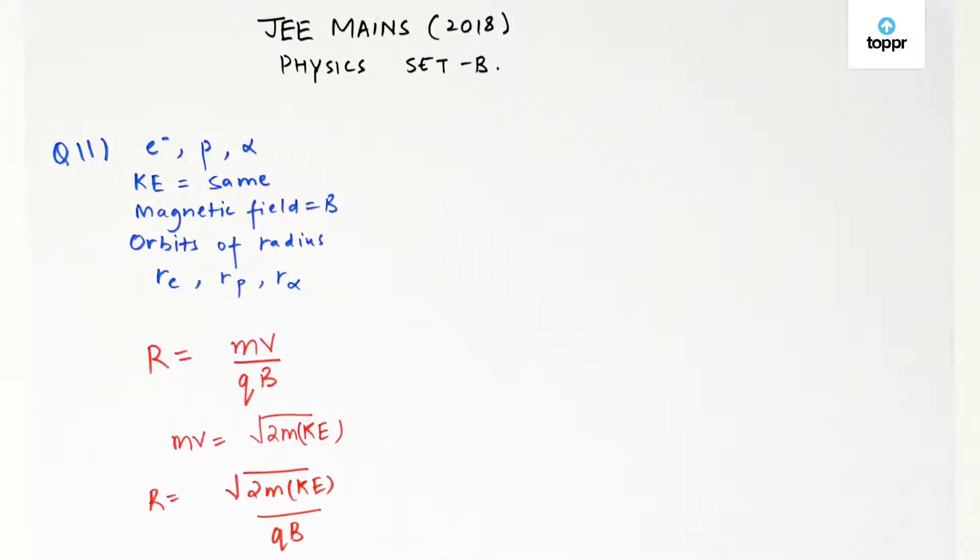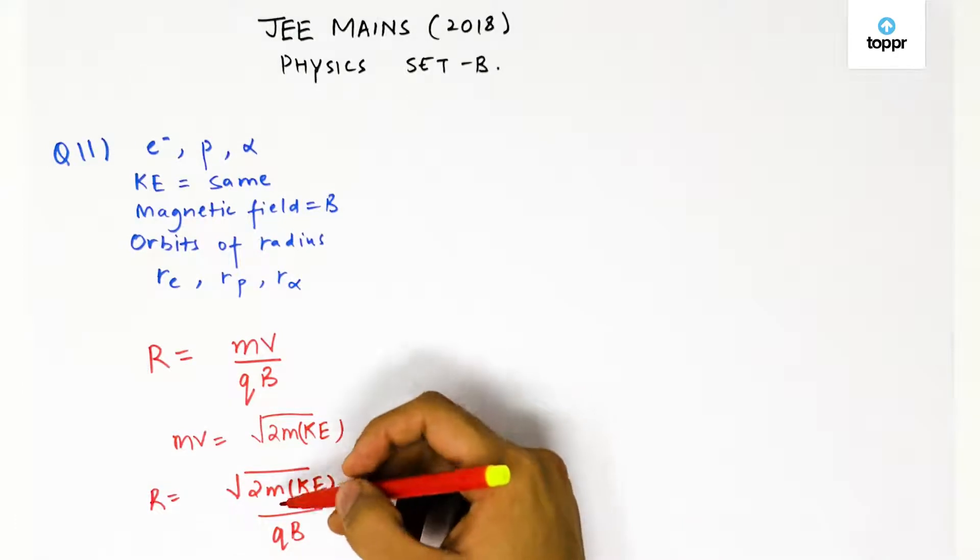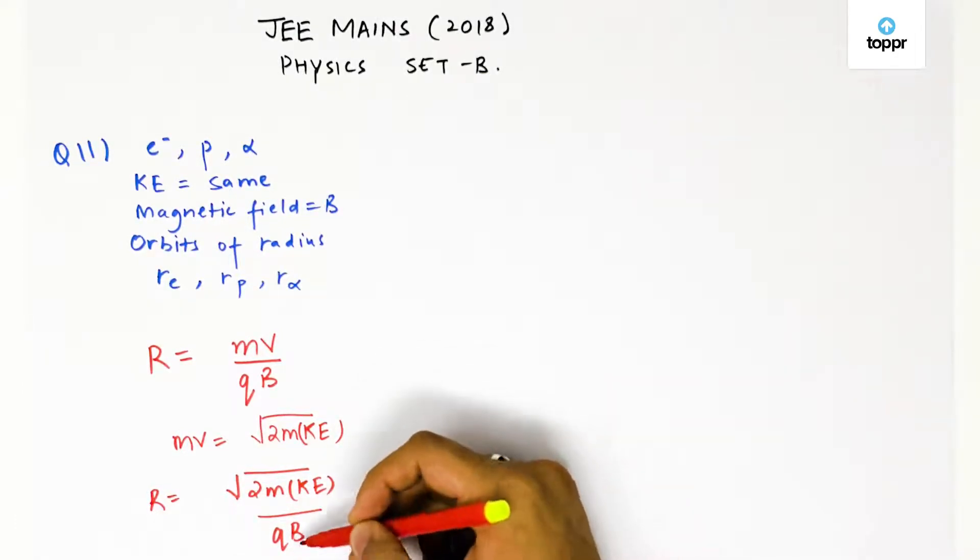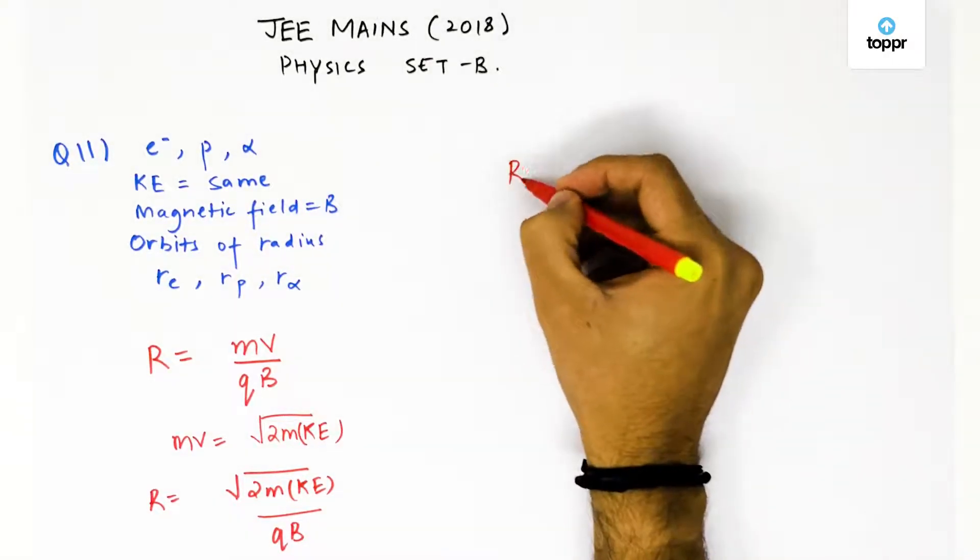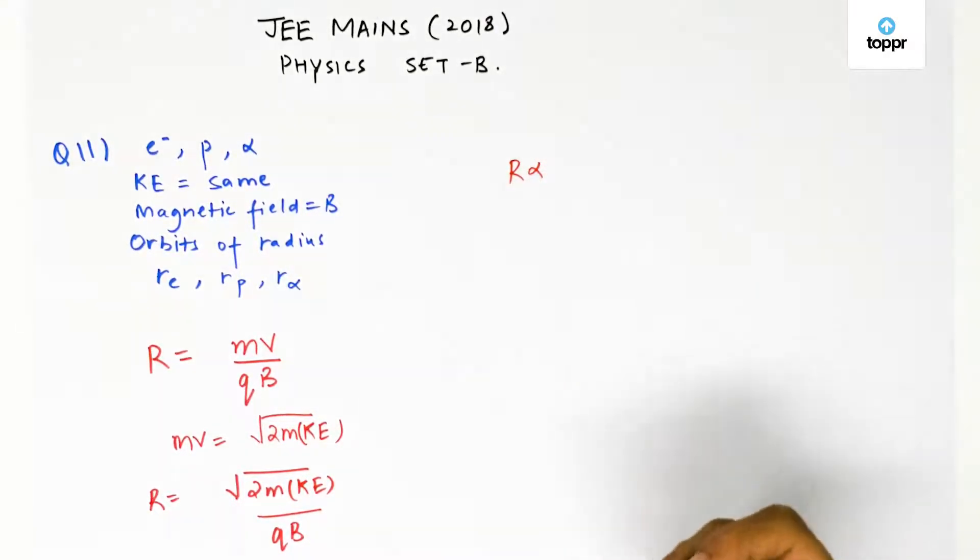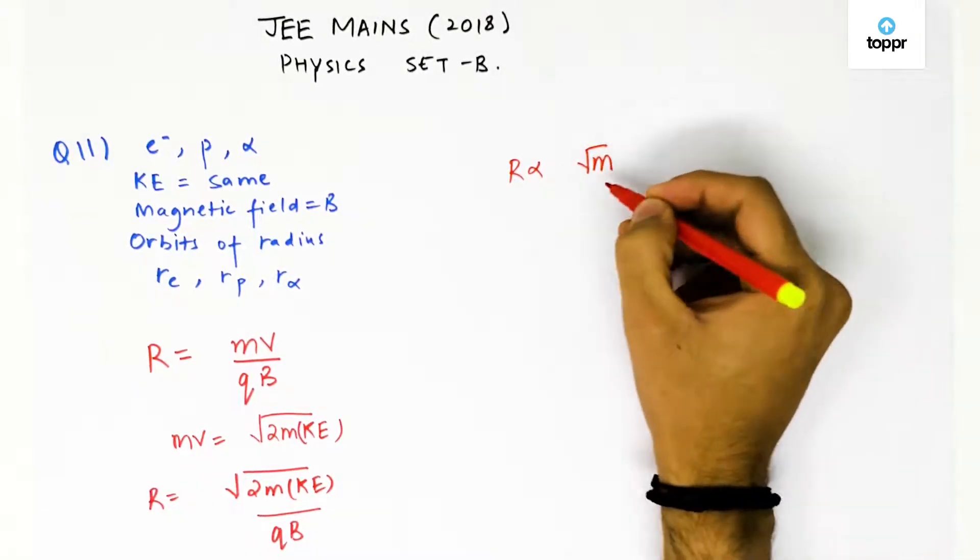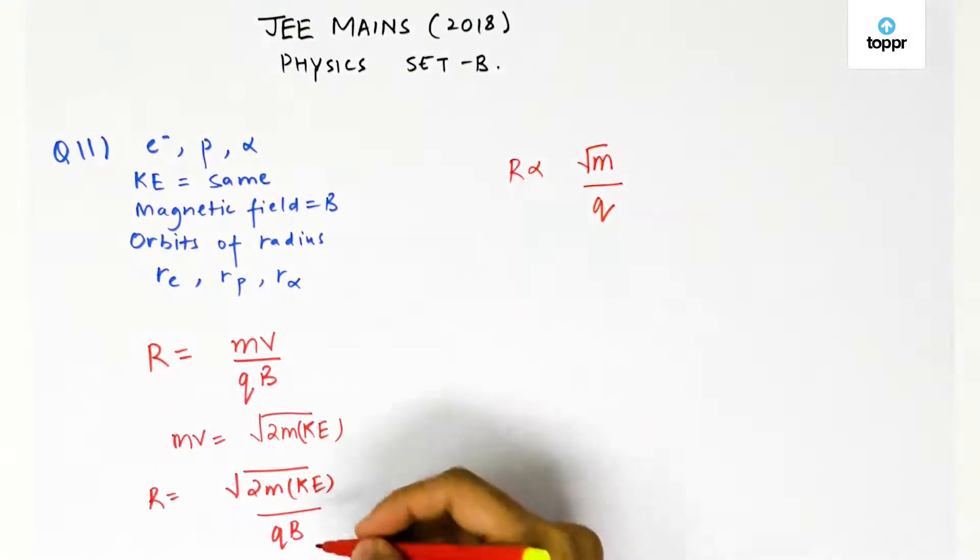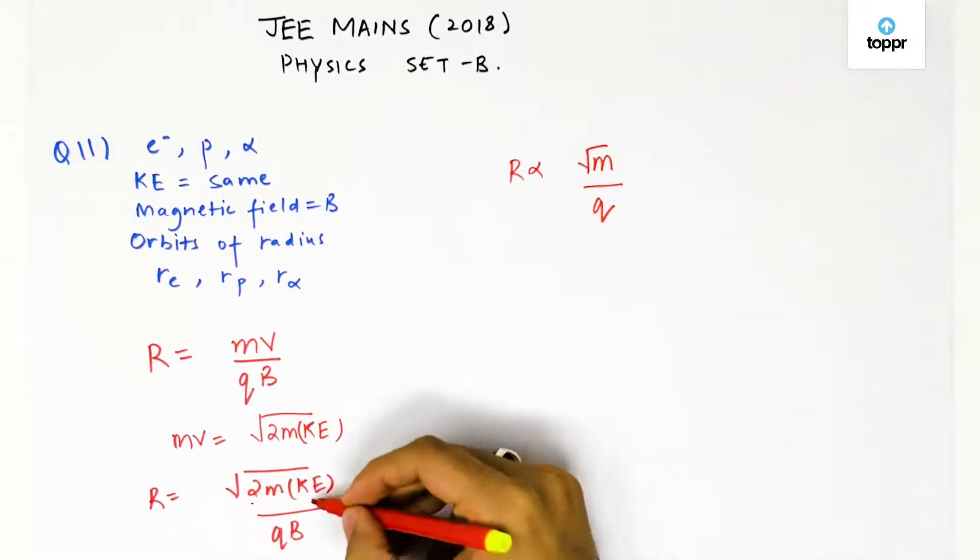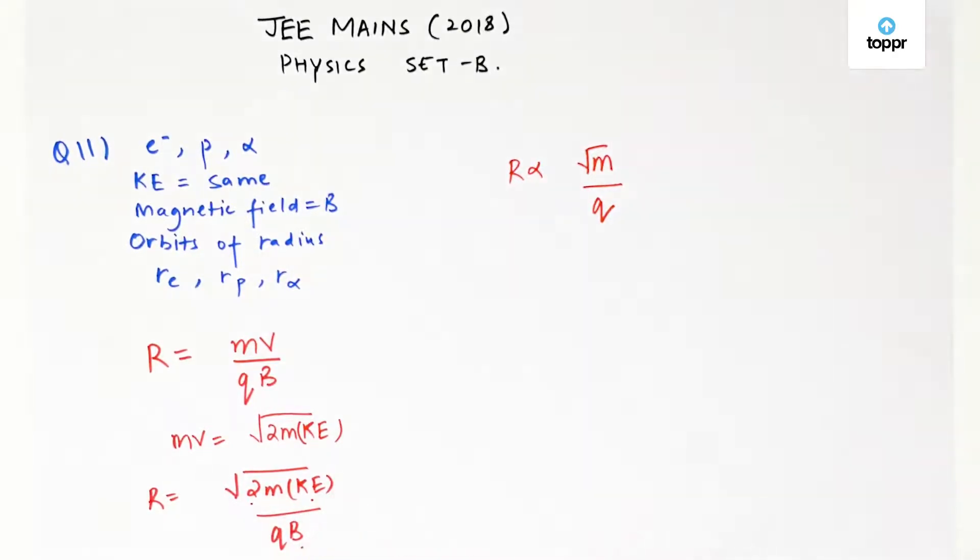In the question it is given that all of them have the same kinetic energy. So kinetic energy would be constant for them. Even 2 is a constant and B is also same. All of the radii will ultimately depend upon root of the mass and their charge because everything else is a constant. It only depends on root m divided by q.